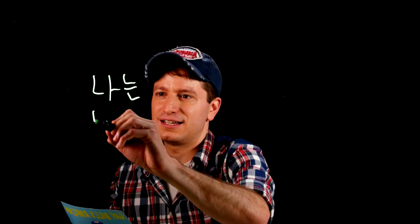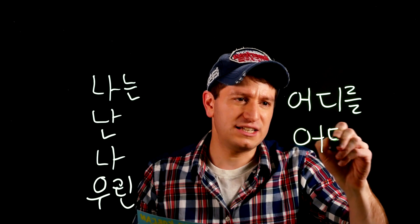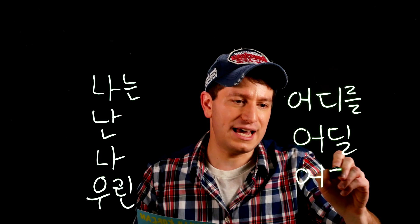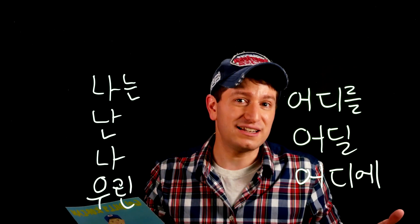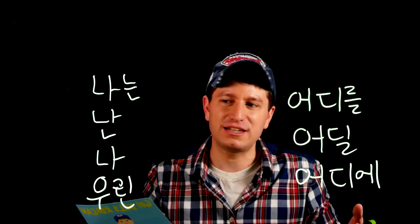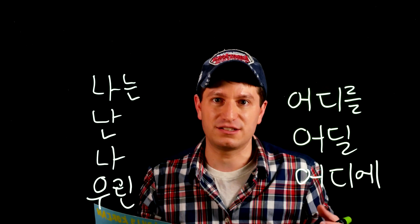Koreans tend to shorten or combine markers, or even remove them altogether. For example, 나는 becomes 난 or even just 나. 우리는 becomes 우린 or just 우리. 어디를 becomes 어딜, and 어디에 becomes just 어디. These types of shortenings and abbreviations don't really happen in Japanese — Koreans are much faster to shorten things than Japanese speakers when it comes to these particles.